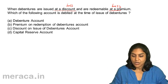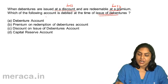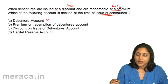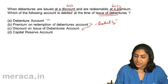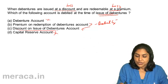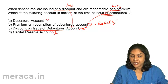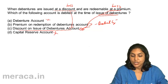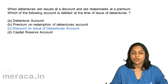When debentures are issued at a discount, it's a loss. Redeemable at a premium is also a loss. Which account should be debited at the time of issue? Debenture account is wrong — it will be credited. Premium on redemption of debentures account will also be credited because it is a liability account. Discount on issue of debentures is correct. Capital reserve does not come into the picture. The entry is: bank account debit with the amount received; loss or discount on issue of debentures account debit with both the loss on discount and the loss on redemption at a premium; credit debentures with the face value; credit premium on redemption of debentures as the liability. So the correct answer is C: discount on issue of debentures.